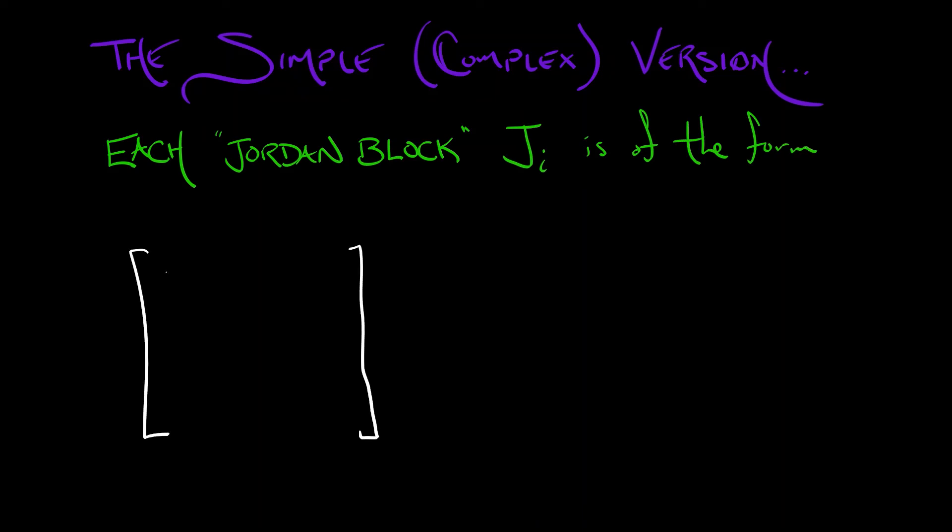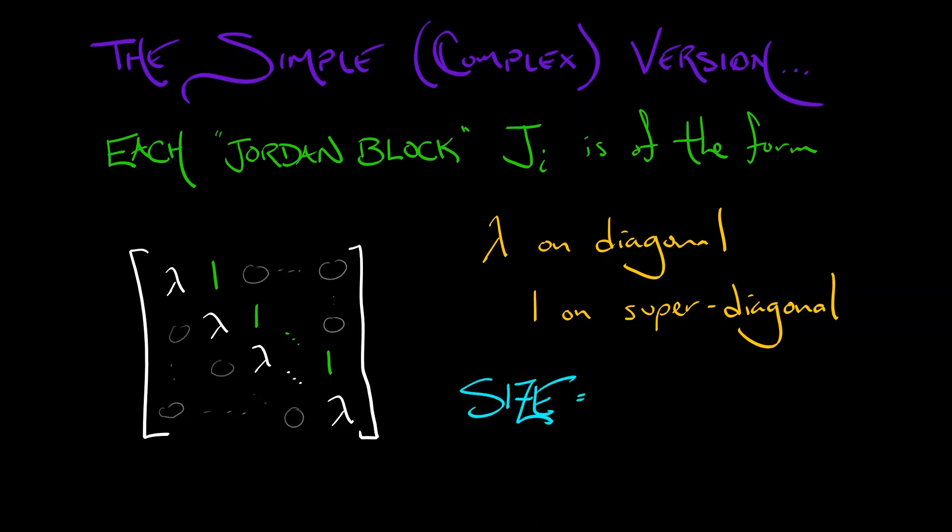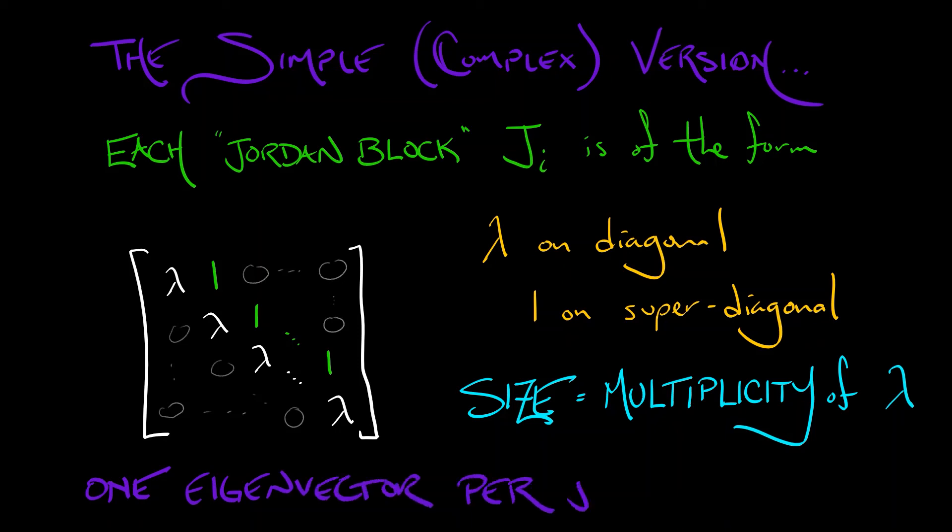It's a square matrix with λ along the diagonal, 1 on the super-diagonal just above it, and zeros everywhere else. The size of this block is the multiplicity of eigenvalue λ, where we distinguish based on eigenvectors. Each block has a repeated eigenvalue λ with just one independent eigenvector. This is where generalized eigenvectors come from. We're not going there, but the important thing is that each block has a single eigenvalue and a single eigenvector associated with it.